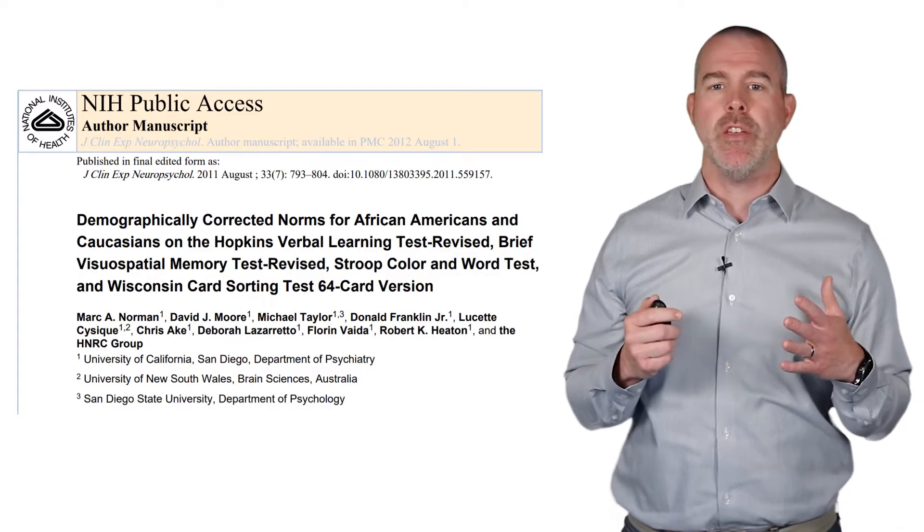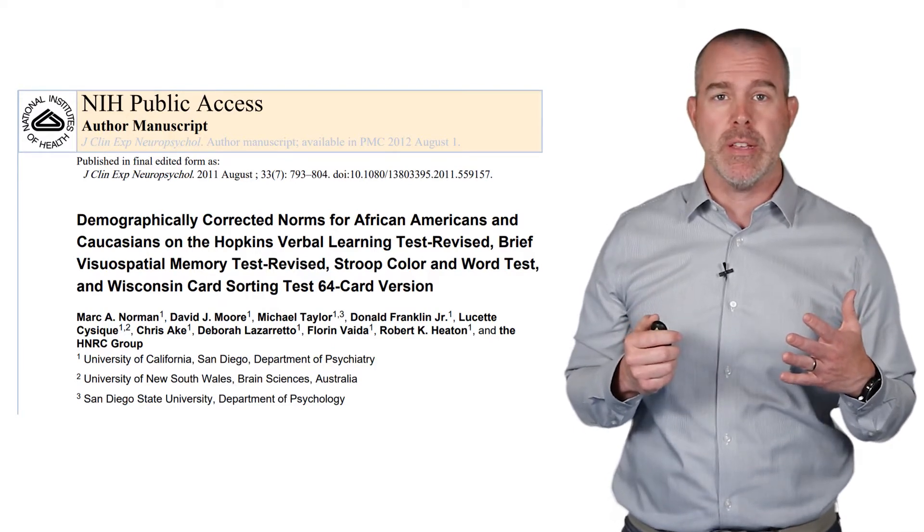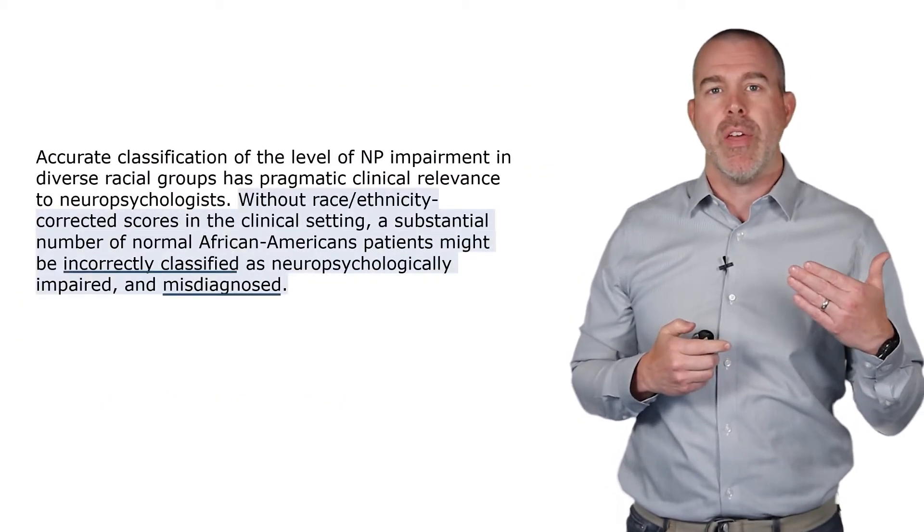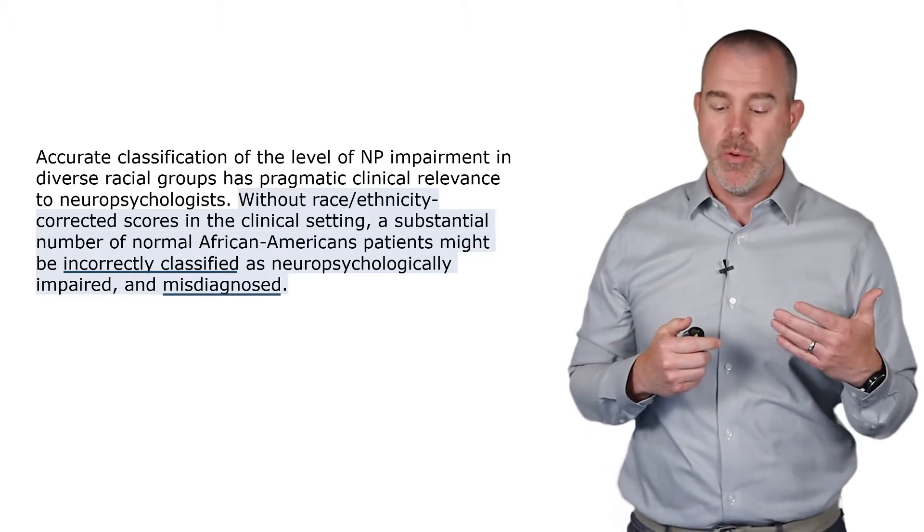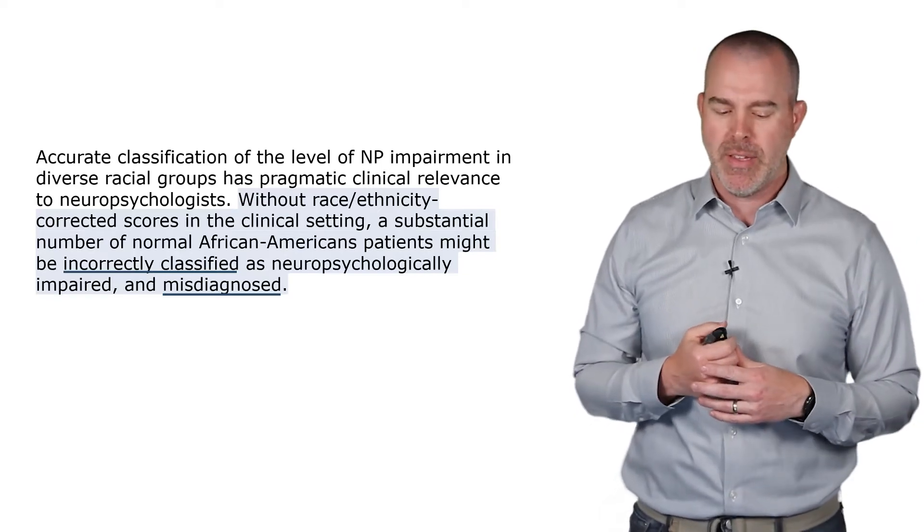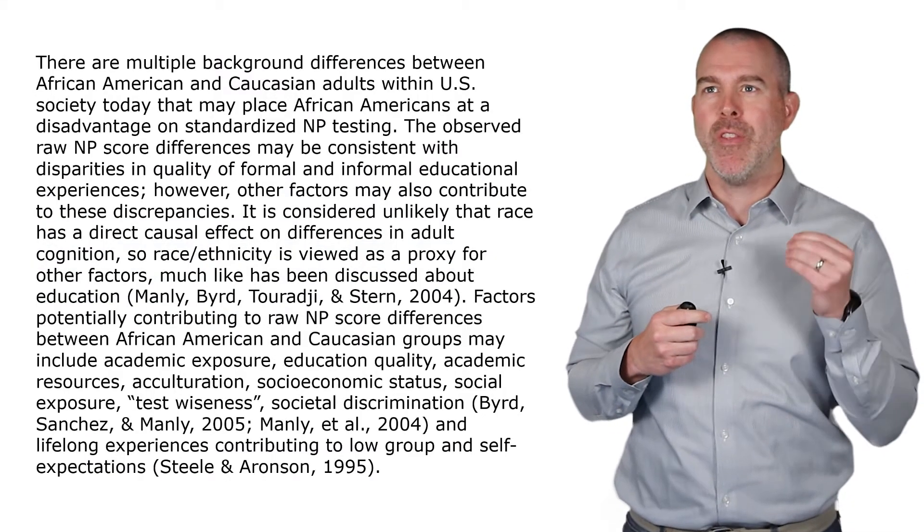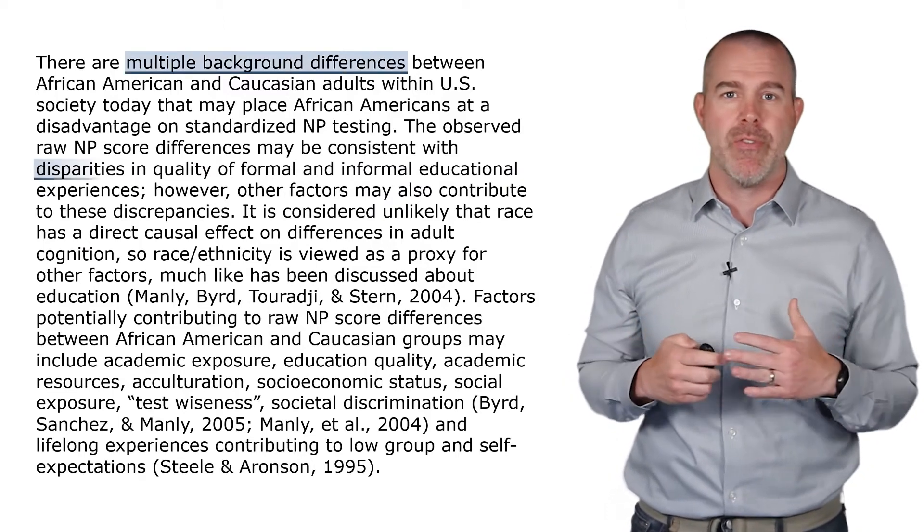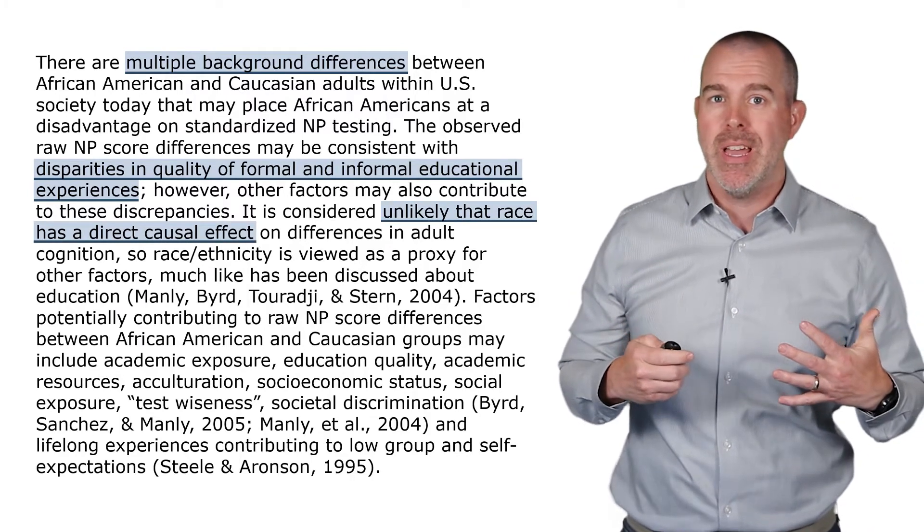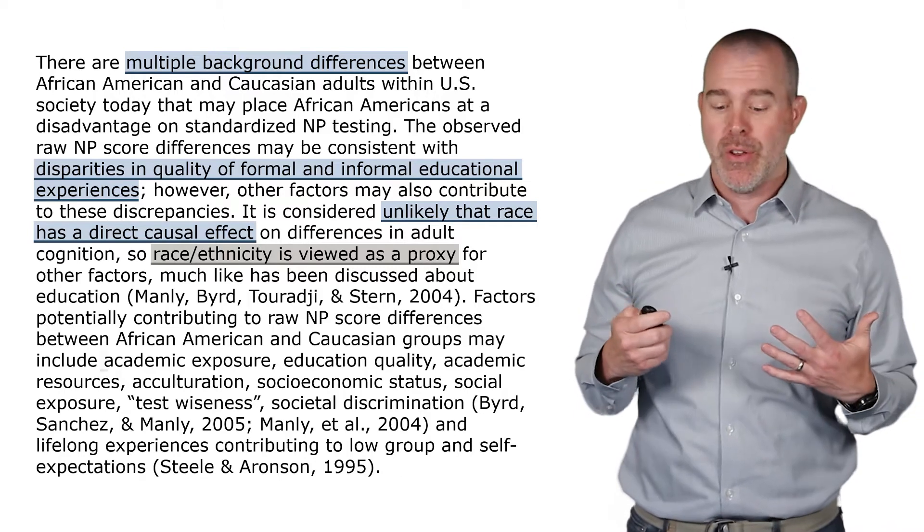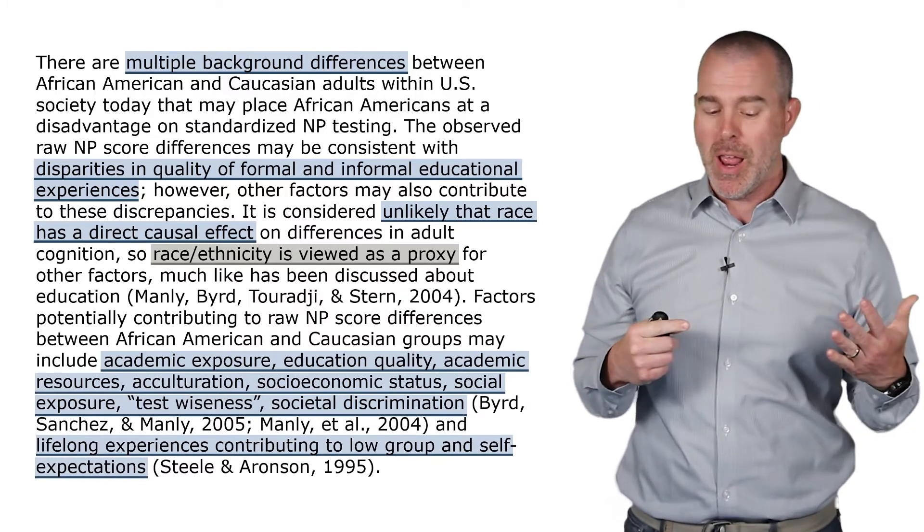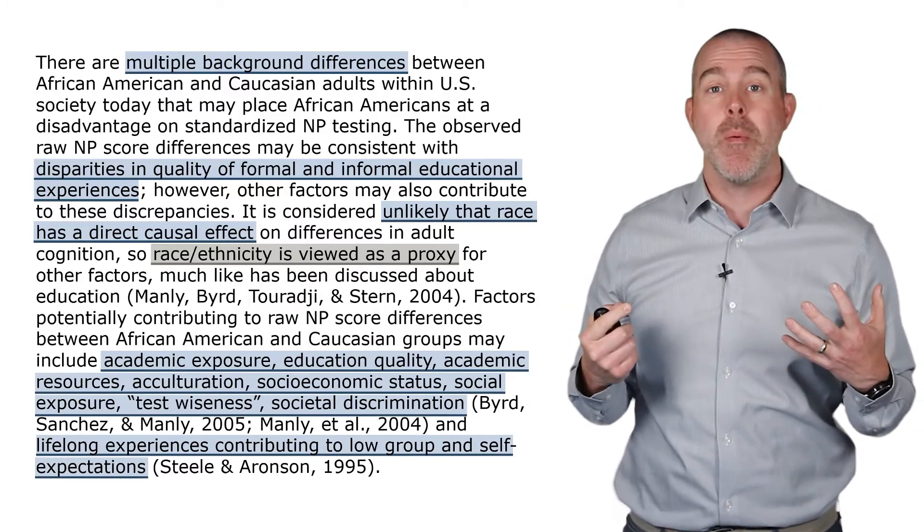Another common norming issue is using race to norm things. There are some researchers that have found that without using race or ethnicity in a clinical setting, some groups, particularly African Americans, might get incorrectly classified, like over-classified as having some impairment. The problem here, and the researchers acknowledge this, is there are multiple background differences, different educational experiences, and it's not like race is some causal variable. It's just a proxy for these other things. They've got a list: academic exposure, educational quality, resources, acculturation, socioeconomic status, social exposure, test wiseness, discrimination—all of these things.